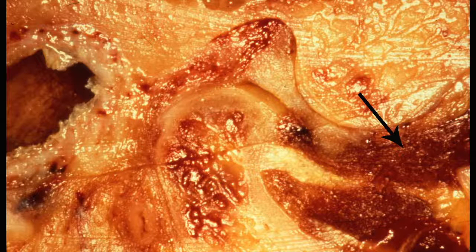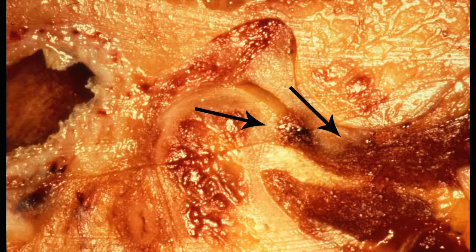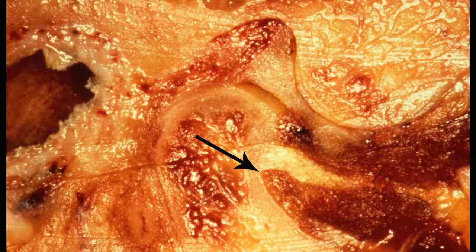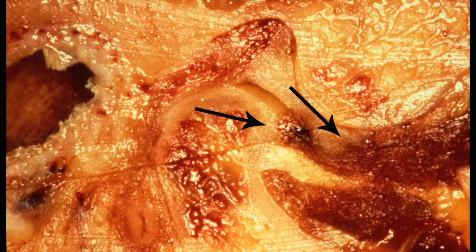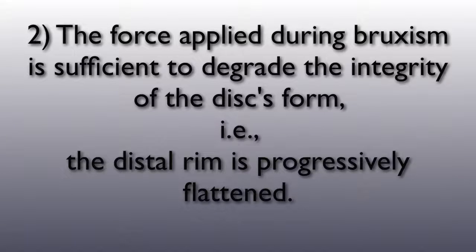The controlling engram is continuously edited via force data input from the teeth. This beautiful dissection by Julio Terrell shows the superior head and the inferior head of the lateral pterygoid muscle. The superior head attaches to the head of the condyle and to the disc. The inferior head attaches to the neck of the condyle. The inferior head is active during opening and protrudes the condyle. The superior head is active during closure, and its function is to control the posture of both the condyle and the disc during closure to MI.